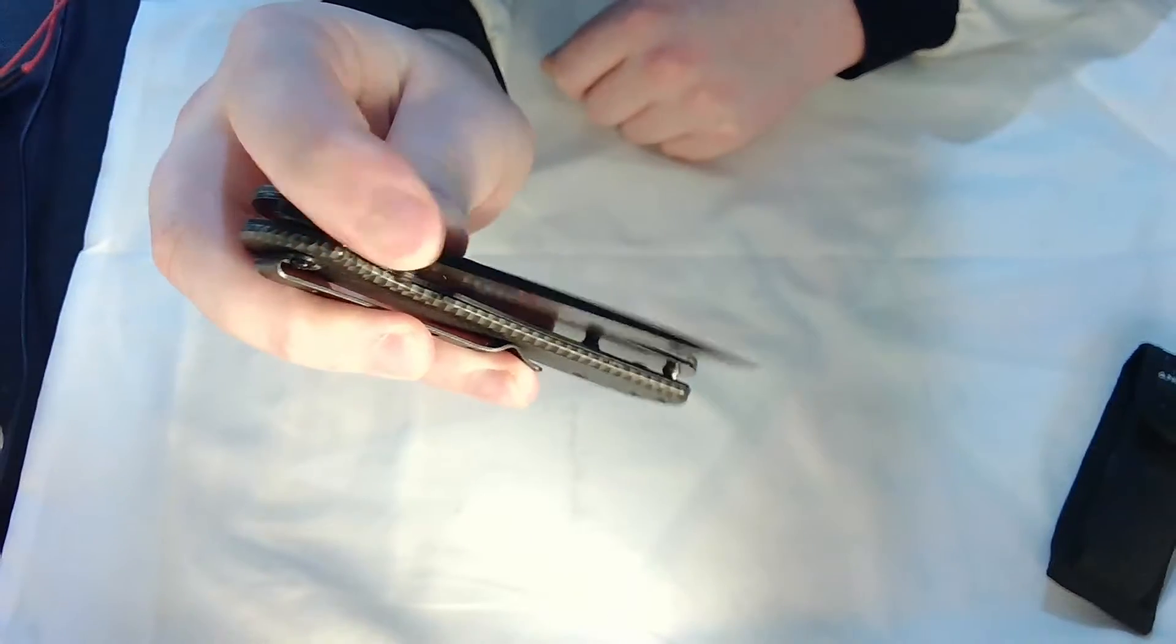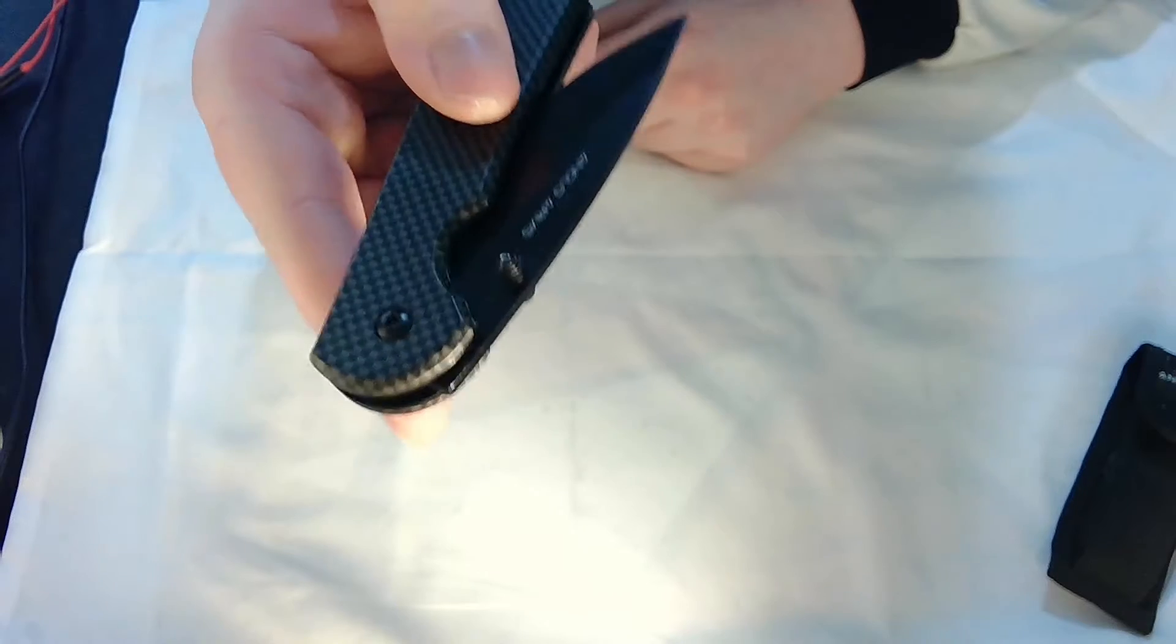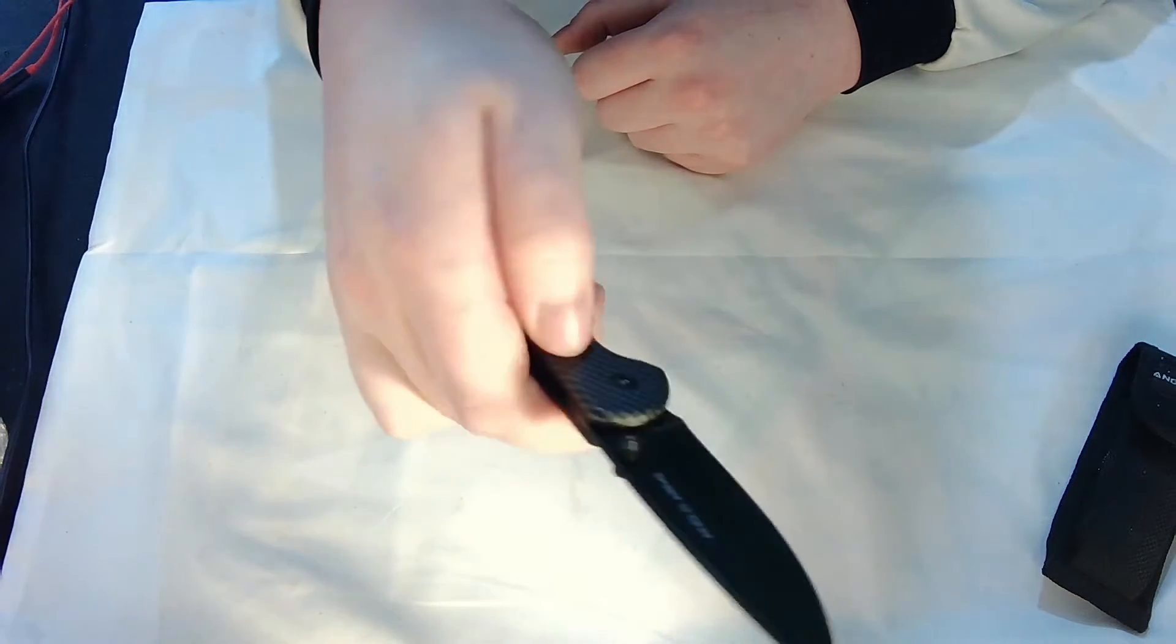Flip it out with your thumb on the little stud on the blade. It's all blacked out, so it's non-reflective. I don't know, if you're like swimming around sharks and you've got it, they're not gonna think you're a shiny fish, I guess.